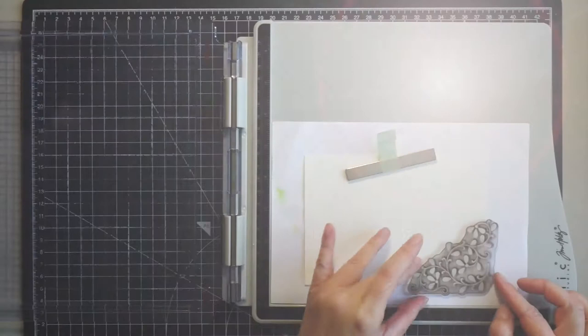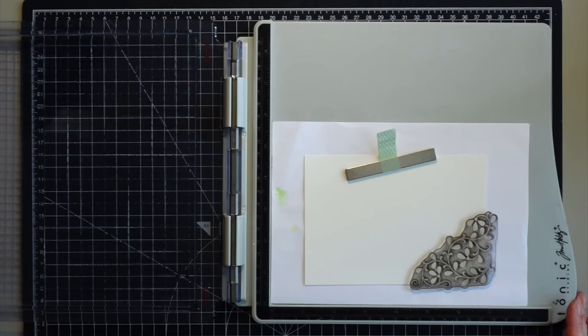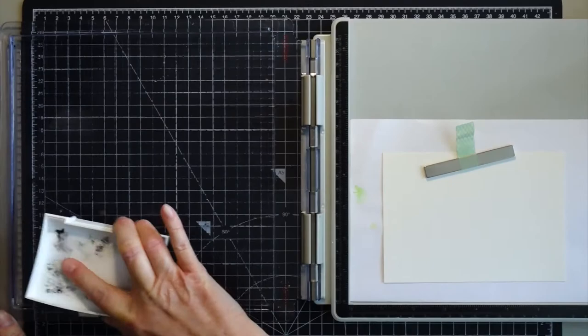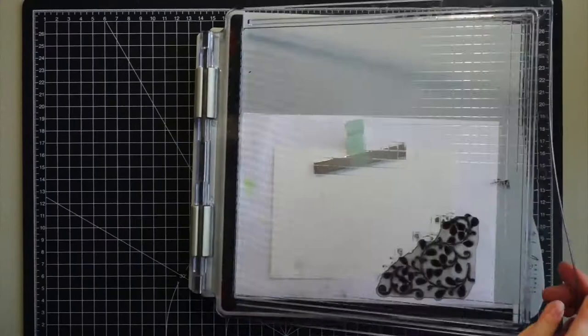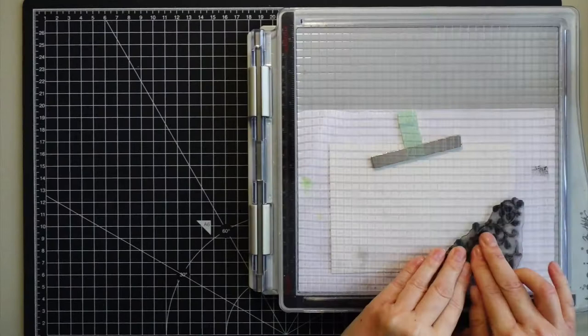I'm only using the corner stamp from the stamp set. I started by stamping with the black ink and I'm using the stamping platform from Tim Holtz. I needed to use a stamping tool because I needed to re-stamp since I'm using a cold press watercolor cardstock that is not smooth.